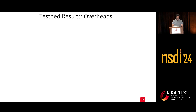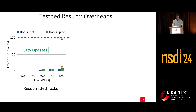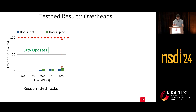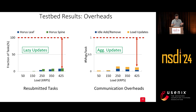We also report multiple overheads. The first is the fraction of tasks being resubmitted compared to systems that resubmit every task, which consumes many resources. Based on our lazy update idea, HORUS reduces the number of resubmitted tasks very significantly. Compared to schedulers requiring one message per task in the control plane, HORUS aggregates updates and also significantly reduces the number of network updates.